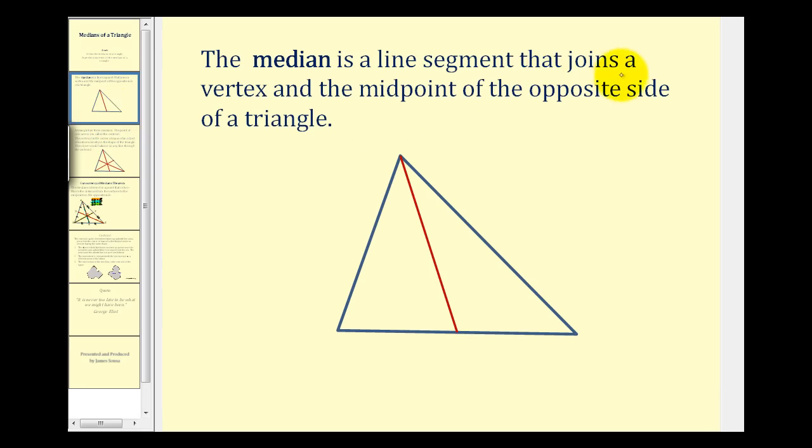The median is a line segment that joins a vertex and the midpoint of the opposite side. So here we see a median in red. And since this is the midpoint of the opposite side, we know that this segment is congruent to this segment.